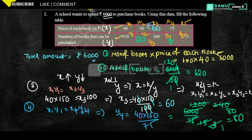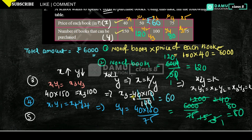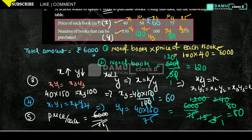So 6,000 divided by 75 equals 80. Number of books that can be purchased is 80 rupees — we can use another method: price of each book equals 6,000 by 75, which gives 80.